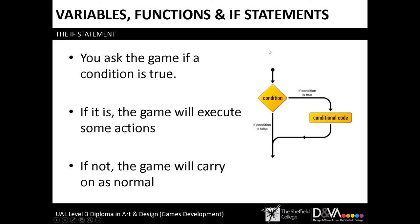Or you might have it linked up to a button in a shop. If the player's trying to buy an item that costs 800 coins, you might have a condition where if the player's coins is greater than 800, then allow them to buy this item. Otherwise, come up with a message saying you cannot afford this item. There are a lot of things you can do with these checks.